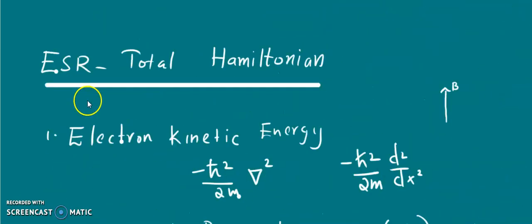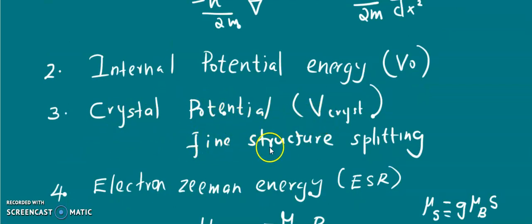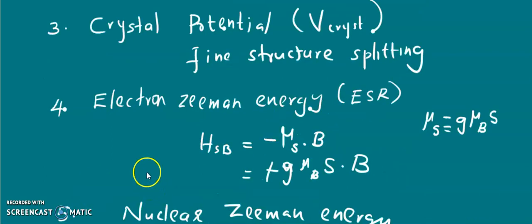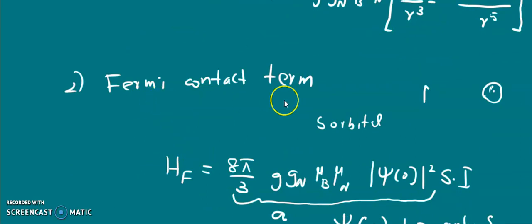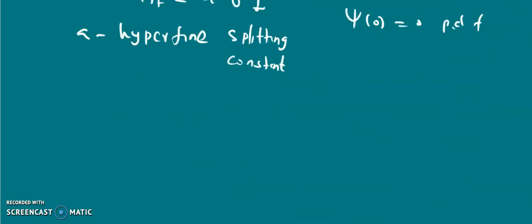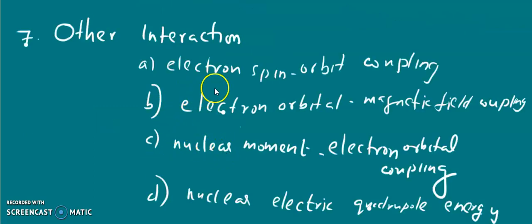These are the major terms in the Hamiltonian: electron kinetic energy, internal potential energy V0, crystal potential V_crystal responsible for fine structure splitting, electron Zeeman energy, nuclear Zeeman energy, and nuclear-electron spin coupling with its two sub-terms (dipole-dipole and Fermi contact). In a crystalline paramagnetic system there are also other interactions: electron spin-orbit coupling, nuclear moment–electron orbital coupling, electron orbital–magnetic field coupling, and nuclear electric quadrupole energy.